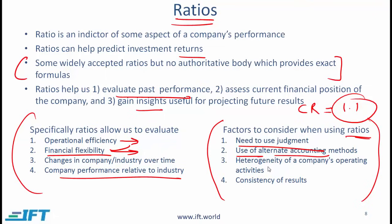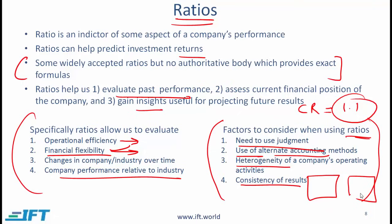Often a given company will have a diverse set of operating units, resulting in a high degree of heterogeneity. As an analyst you need to recognize that and perhaps come up with ratios for each business unit. A company like General Electric — with a financial services division, an aircraft division, and an appliances division — has a very heterogeneous business, so a single ratio capturing all of GE's businesses might not make much sense. Regarding consistency of results: occasionally one set of ratios, such as profit margin ratios, might indicate a problem while another set, such as activity ratios, indicates no problem. You need to dig in deeper to understand exactly what is going on.